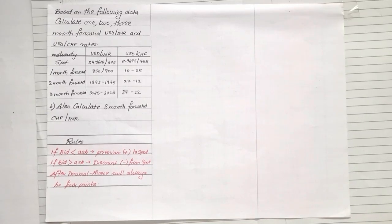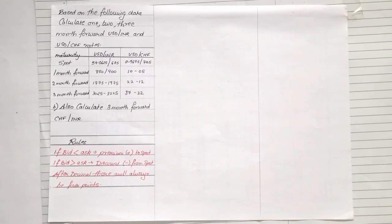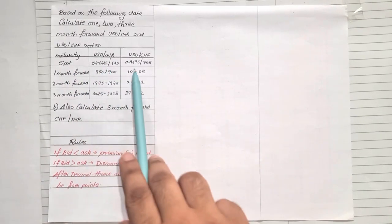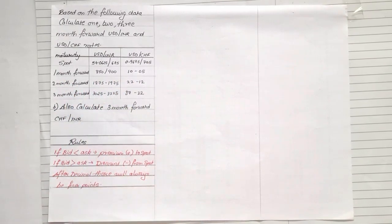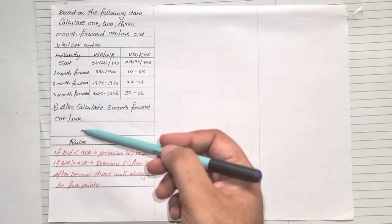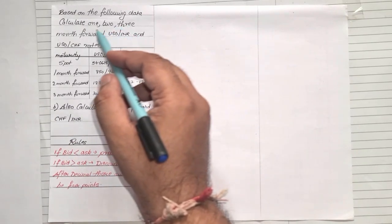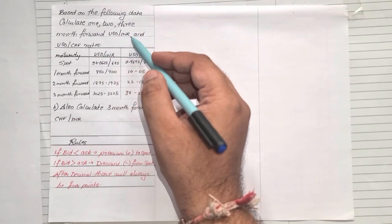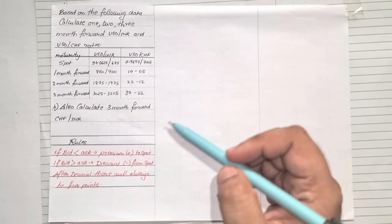Now let us see how to solve the sum based on forward exchange. They have given a question: based on the following data, calculate 1, 2 and 3 months forward USD to INR and USD to CHF — that is Swiss franc. They are giving you the spot rate of USD to INR and USD to CHF. One month, two months, and three months forward rates are given in point form. Secondly, they are also asking to calculate three months forward for CHF to INR. So we are going to solve in two parts: Part A and Part B.